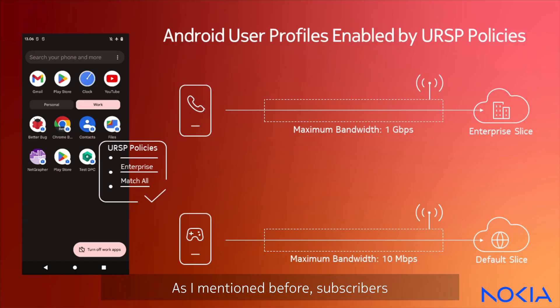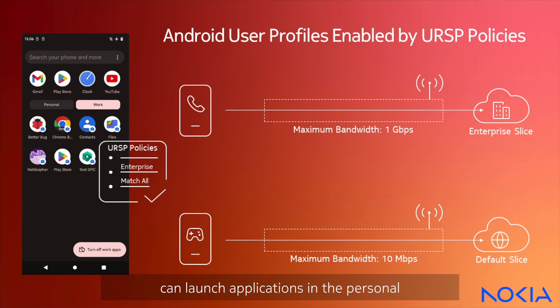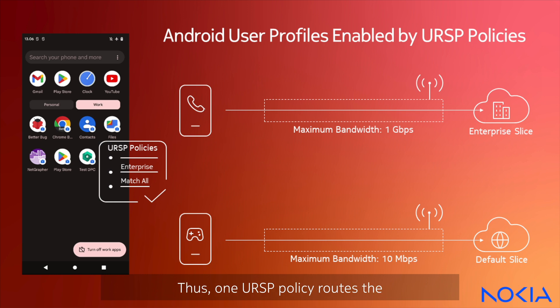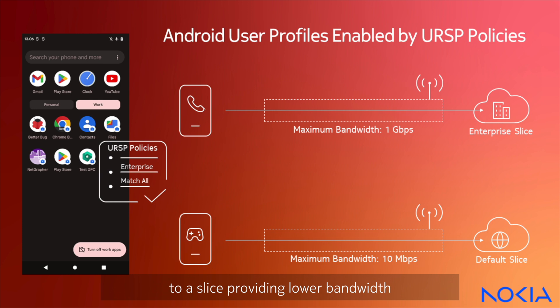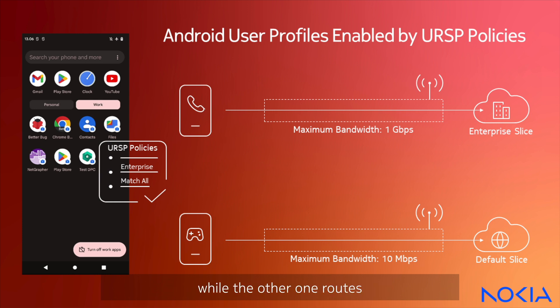As I mentioned before, subscribers with Android devices can launch applications in the personal or the work profile. Thus, one URSP policy routes the traffic of personal applications to a slice providing lower bandwidth, while the other one routes the traffic of work applications to another slice providing higher bandwidth.